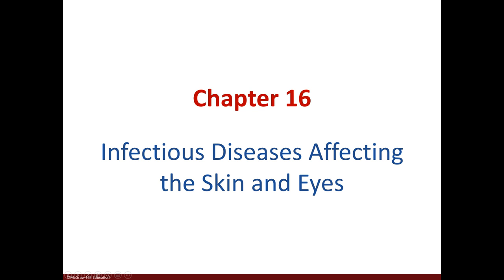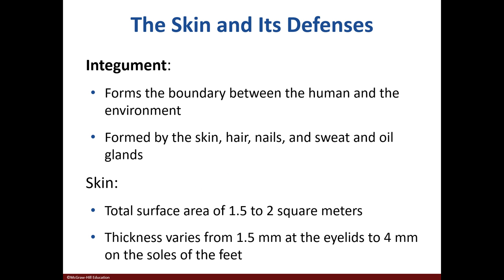This chapter will focus on diseases that affect our skin and eyes. Our skin has a pretty good defense system to protect us from pathogens. Our integument includes skin, hair, nails, and glands.